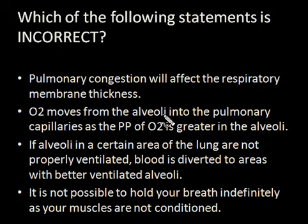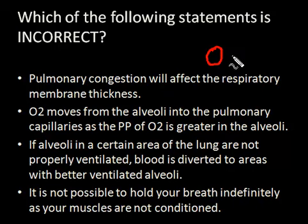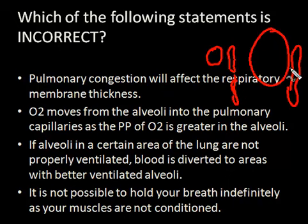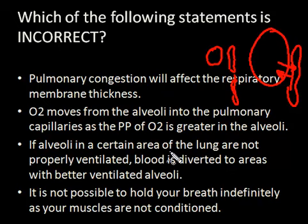The next statement says if alveoli in a certain area of the lung are not properly ventilated, blood is diverted to areas with better ventilated alveoli. Logically, a poorly ventilated alveolus will have its capillary constrict, while a well-ventilated alveolus will have its capillaries dilate so that gas exchange occurs properly. This is called the ventilation-perfusion ratio, and this is again a true statement.